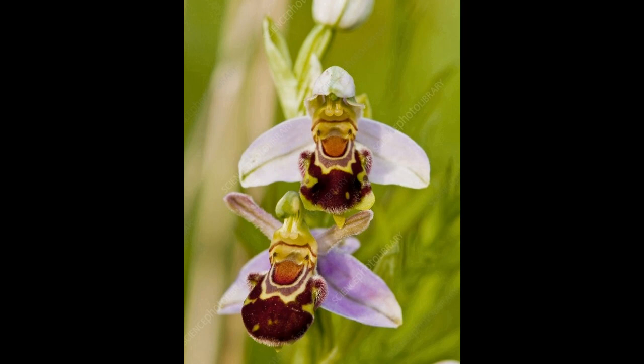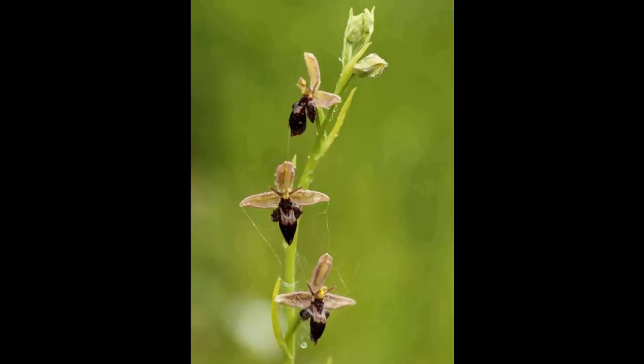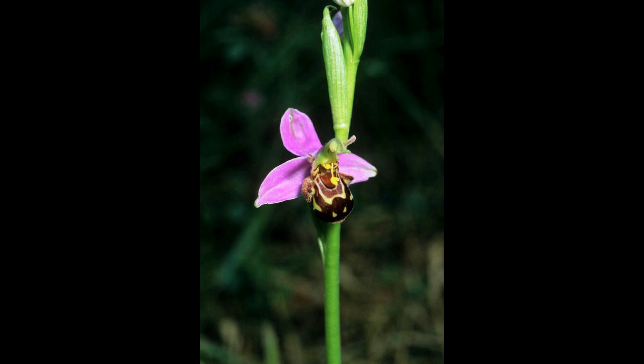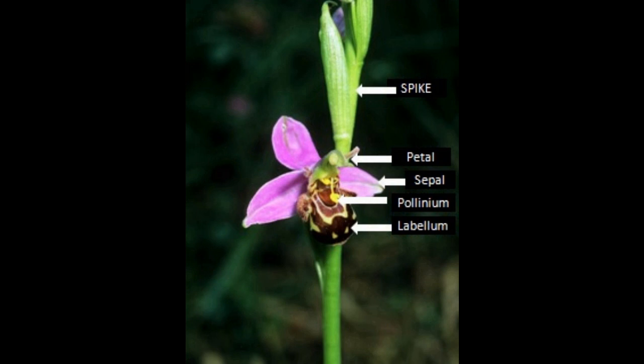Ophrys apifera, commonly known as the bee orchid, serves as an example of sexually deceptive pollination and floral mimicry, as well as of a highly selective and highly evolved plant-pollinator relationship. The flower spike is composed of one to twelve flowers. The flower has three large purple sepals surrounding the base, and the petals lie just above the sepals as two short pubescent green structures protruding laterally from a central column. A third modified petal, the labellum, sits at the bottom of the column as a landing pad for pollinators.